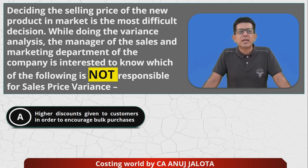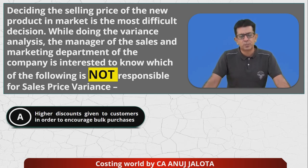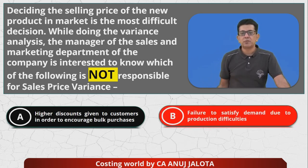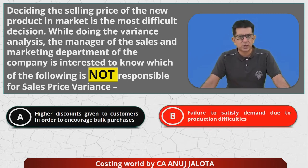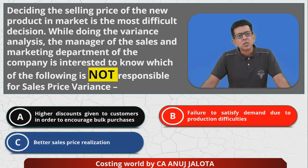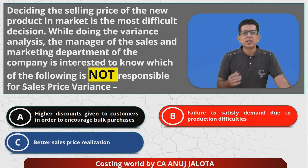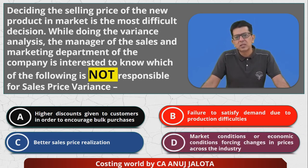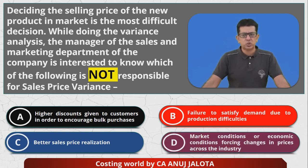The four options are: A — Higher discounts given to customers in order to encourage bulk purchases. B — Failure to satisfy demand due to production difficulties. C — Better sales price realization. D — Market conditions or economic conditions forcing changes in prices across the industry.